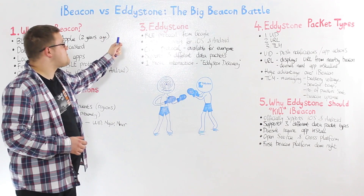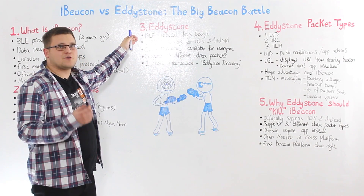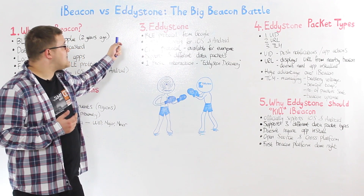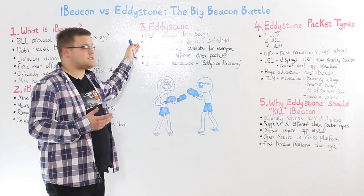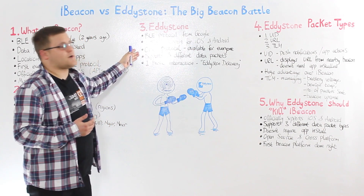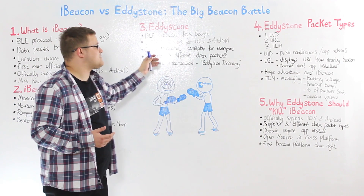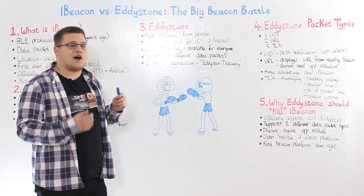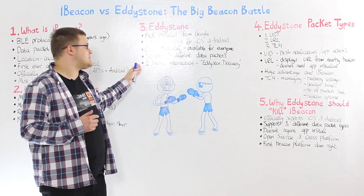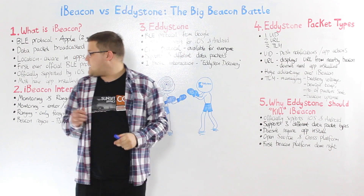What is Eddystone? Eddystone is a Bluetooth Low Energy protocol from Google and it was created in 2015. It officially supports both platforms, iOS and Android. It is an open protocol available for everyone. It is built to support three different data packets. It supports one basic interaction, which is called Eddystone Discovery and is a little bit like iBeacon Ranging.